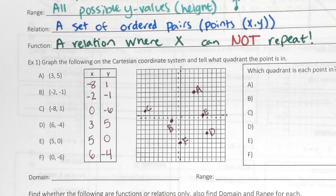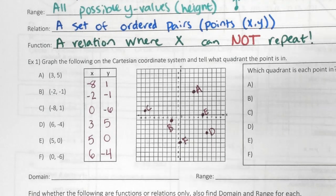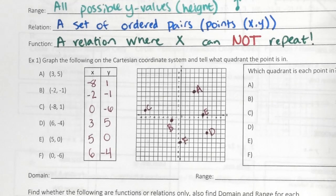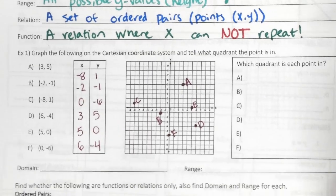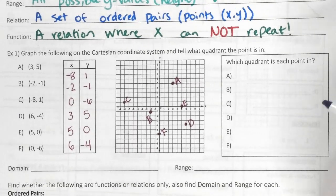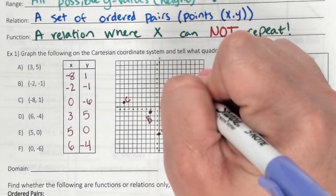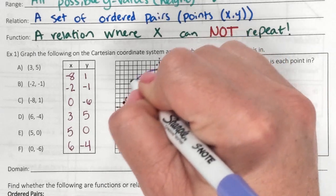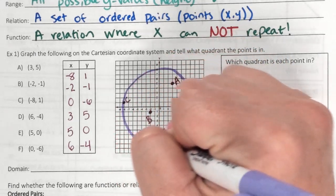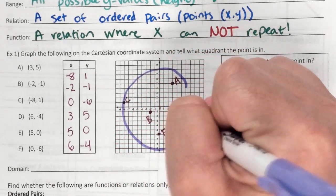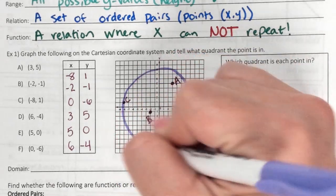So that's your refresher on plotting points. Now we're going to talk about quadrants quickly. You label quadrants like if you're drawing a C — you start top right and work your way around.